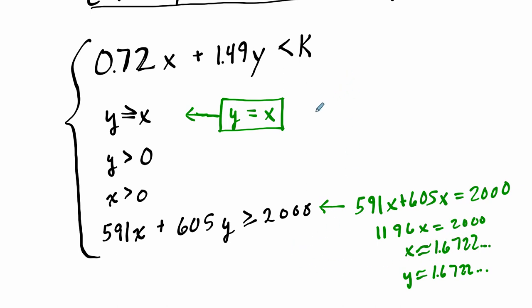But then what we want to do is look at, well, how much money do we need to get that? So now we can substitute that into our first equation. Again, substituting y equals x. So 0.72x plus 1.49x, let's say equals k. When will this happen? Well, 0.72 plus 1.49 is 2.21x equals k. And we know that x also has to be 1.6722. So we can say 2.21 times 1.6722, the exact amount. I forget. I have it in the calculator. But that's what equals k.